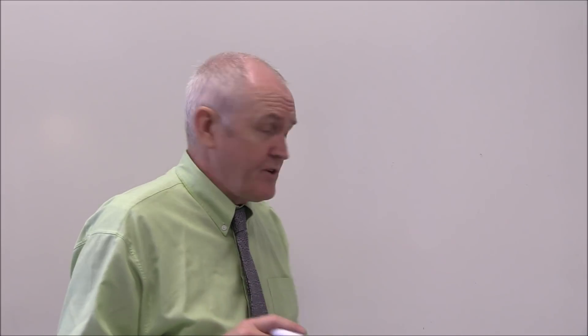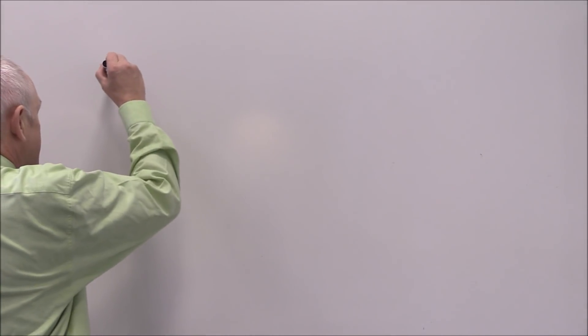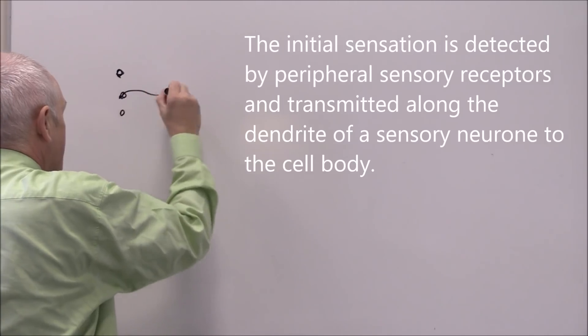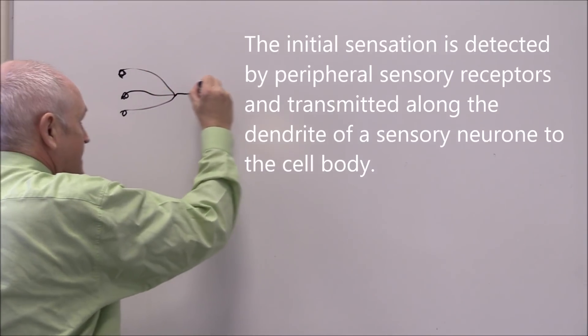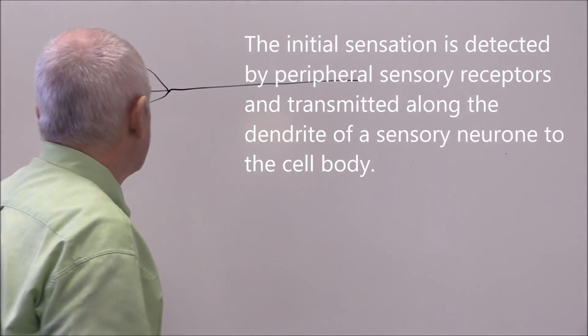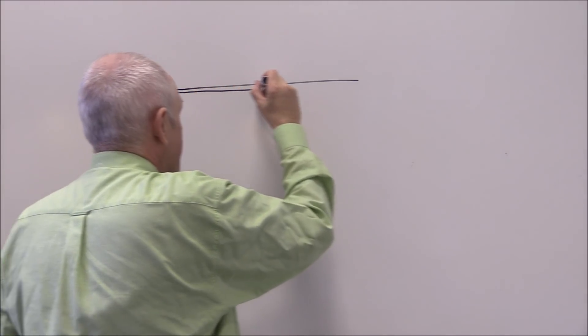So let's first of all think about a sensory neuron. Here we have some peripheral sensory receptors and the nerve fiber of the sensory neuron as we've seen before.